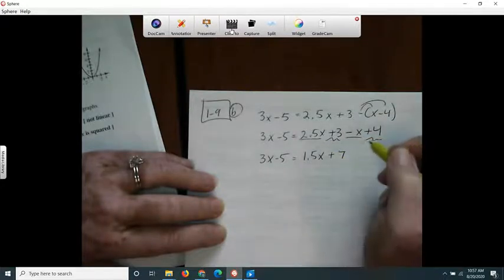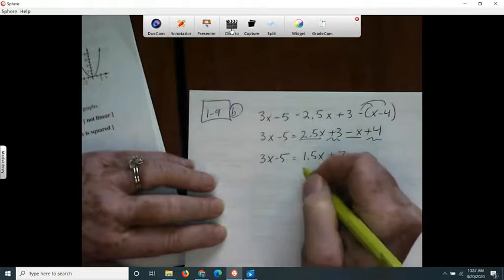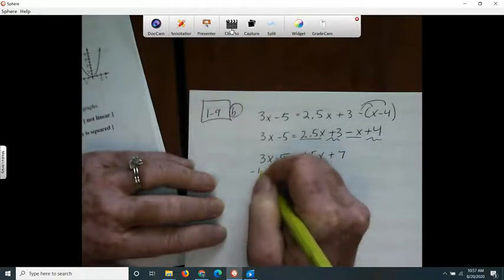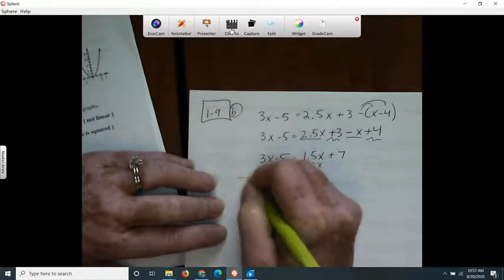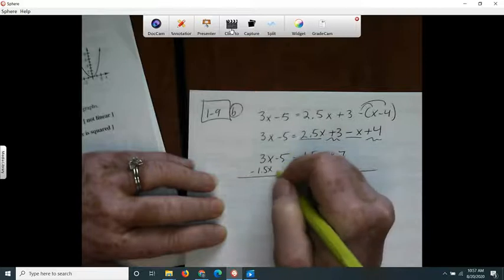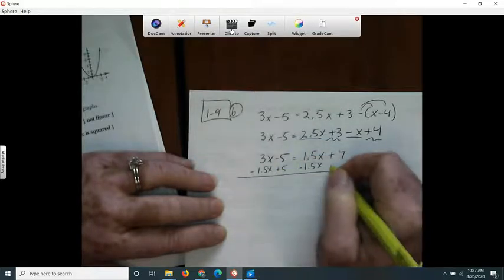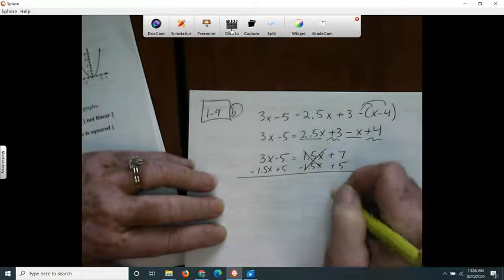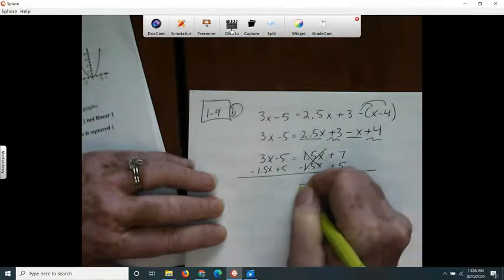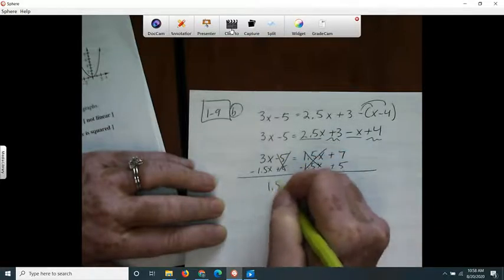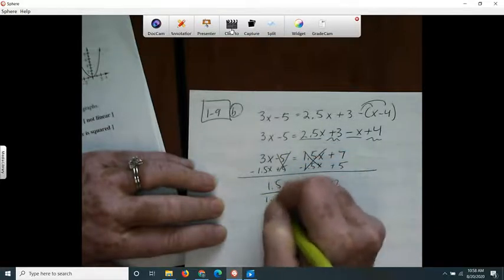And so now I want to get all my x's on the same side of the equation. So I'm going to subtract the 1.5x on both sides. I think I'm also going to add the 5 on both sides at the same time. So that cancels out. This makes 12. That cancels out. This makes 1.5x. Divide by 1.5.